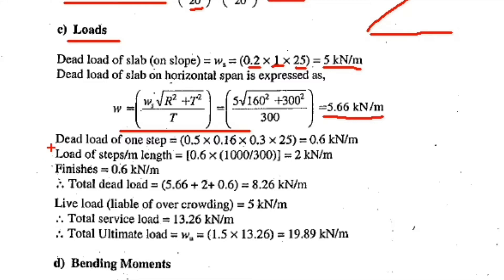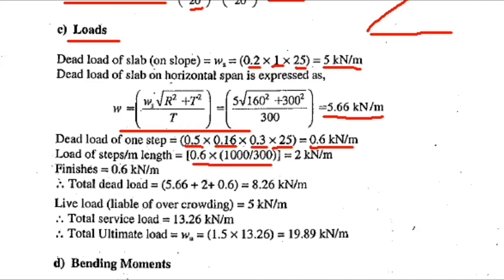Next we find the dead load of one step: 0.5 into 0.16 (riser) into 0.3 (tread) into 25 (unit weight of concrete) equals 0.6 kN per step. Load per metre length equals 0.6 into 1000 divided by 300 (tread value), giving 2.0 kN/m.